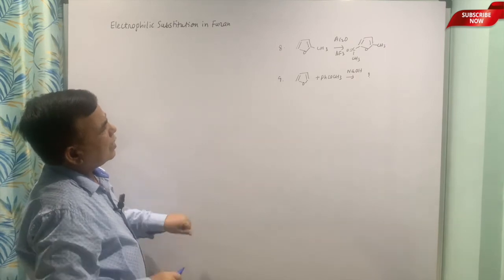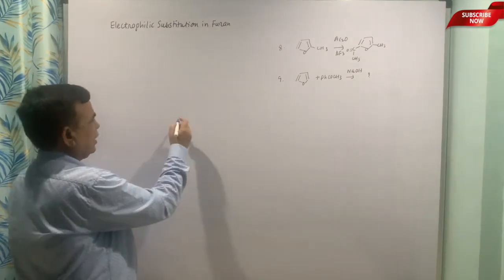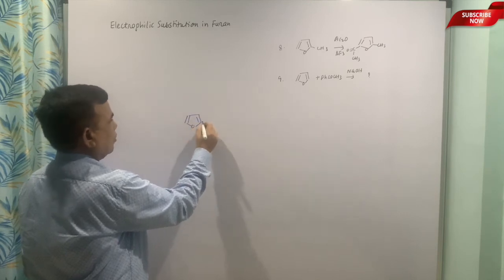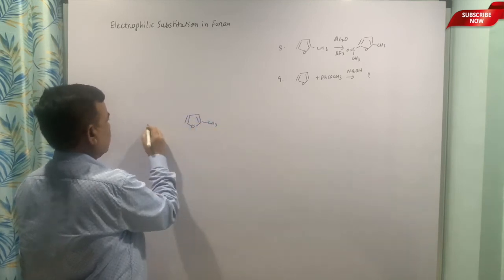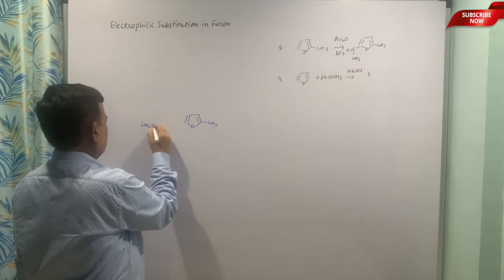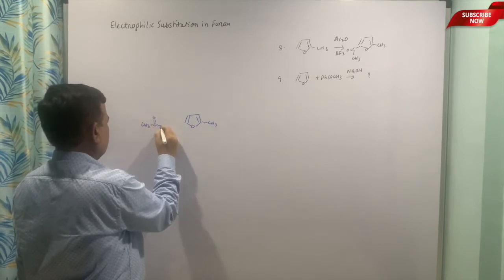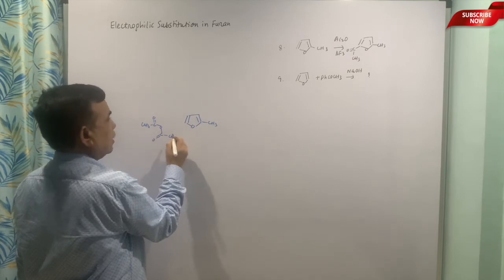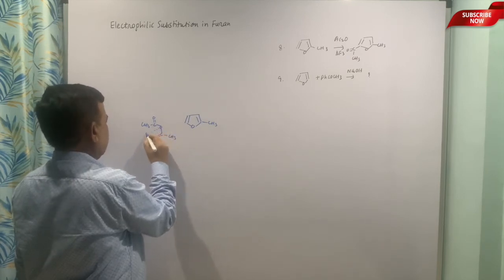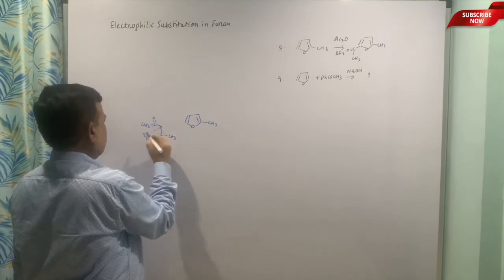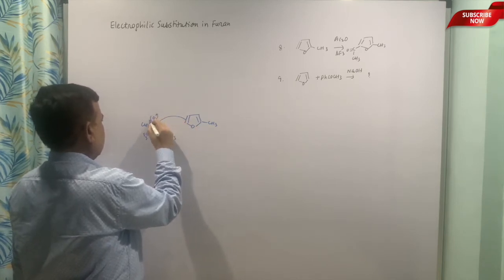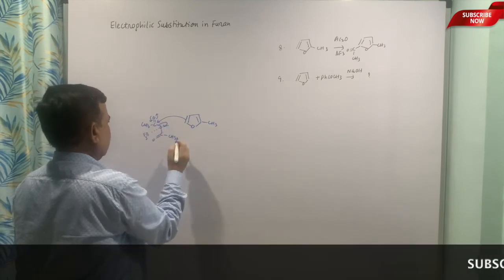And the next one is acetyl chloride with BF3. Once again it is acylation reaction. So this position is blocked, so we have to look at another available position. COCl with BF3. Once again it will bind with this and it will help in the attacking of this, and this will go out.